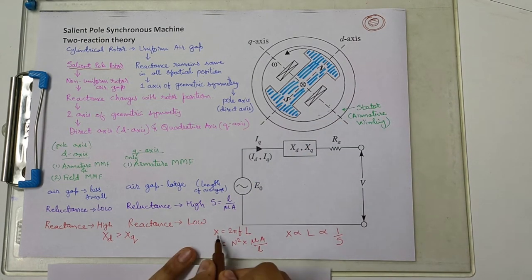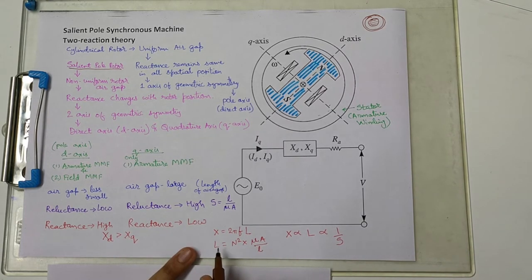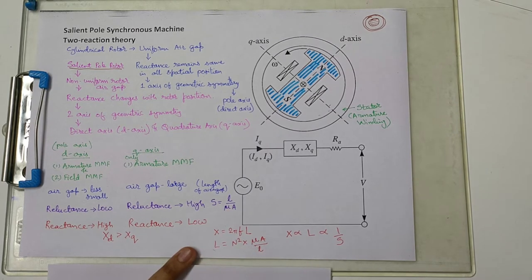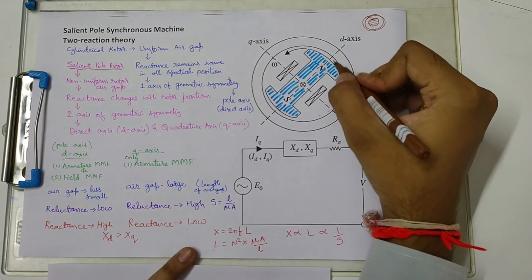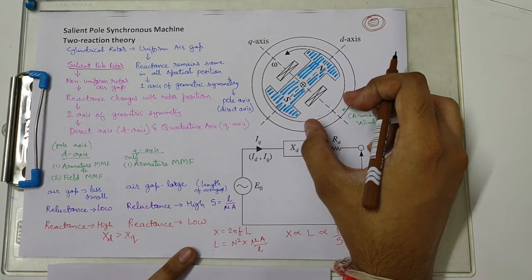Reactance X is defined as X = 2πfL, where f is frequency and L is inductance. The inductance formula is L = μN²A/l. So reactance is directly proportional to inductance, and inductance is inversely proportional to reluctance — since S = l/(μA). Therefore, where reluctance is low, reactance is high. The direct axis has low reluctance, so direct axis reactance XD is high. The quadrature axis has high reluctance, so quadrature axis reactance XQ is lower.